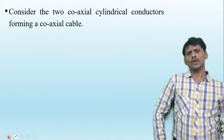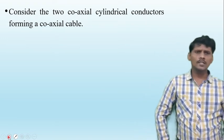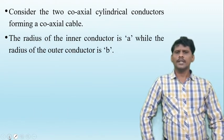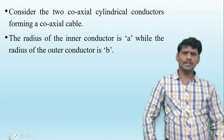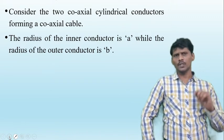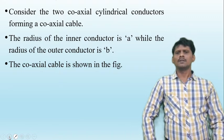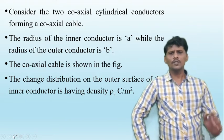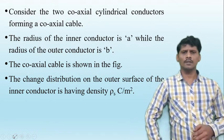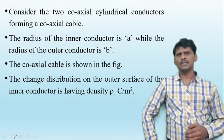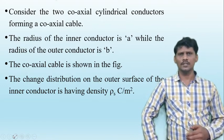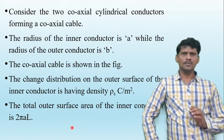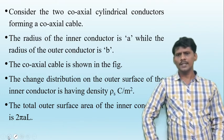Consider two coaxial cylindrical conductors forming a coaxial cable. The radius of the inner conductor is small 'a' meters and the radius of the outer conductor is small 'b' meters. The charge distribution on the outer surface of the inner conductor has charge density rho_s coulombs per meter squared. The total outer surface area of the inner conductor is 2πaL.